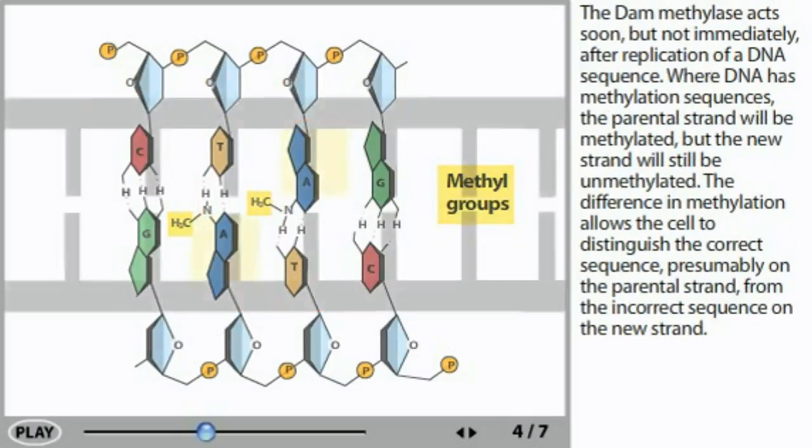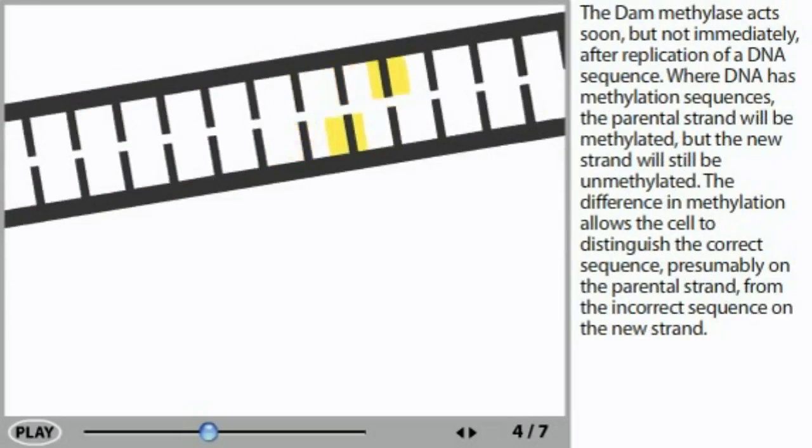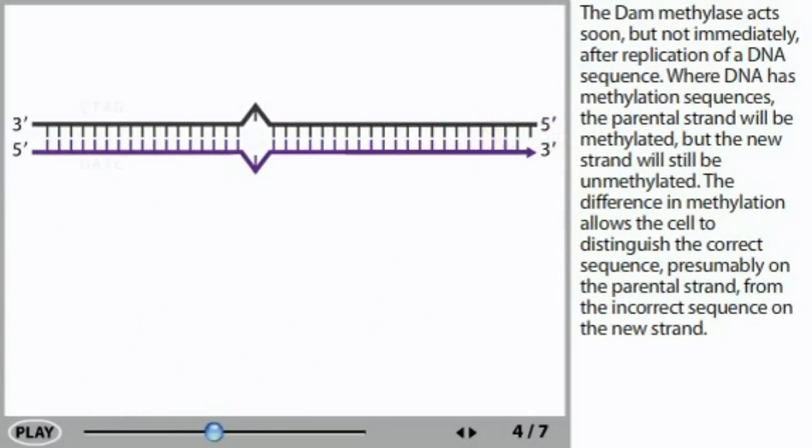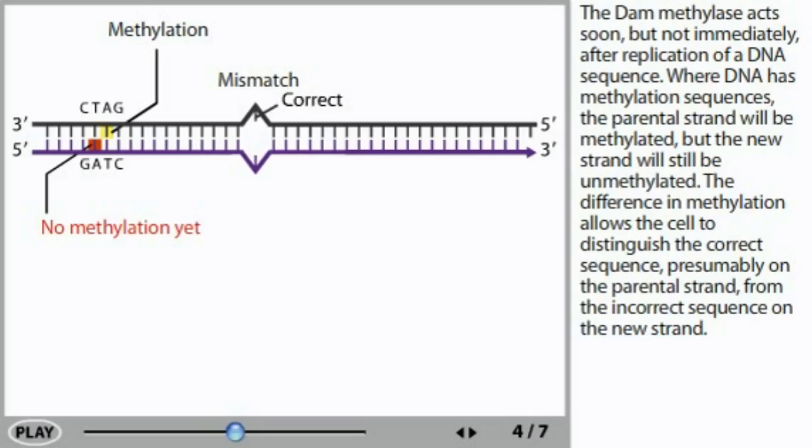The DAM methylase acts soon, but not immediately, after replication of a DNA sequence. Where DNA has methylation sequences, the parental strand will be methylated, but the new strand will still be unmethylated. The difference in methylation allows the cell to distinguish the correct sequence, presumably on the parental strand, from the incorrect sequence on the new strand.